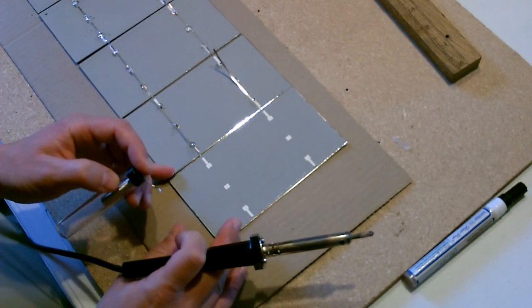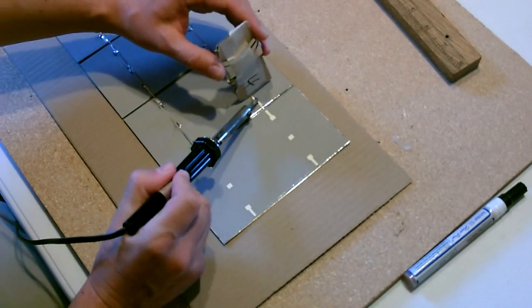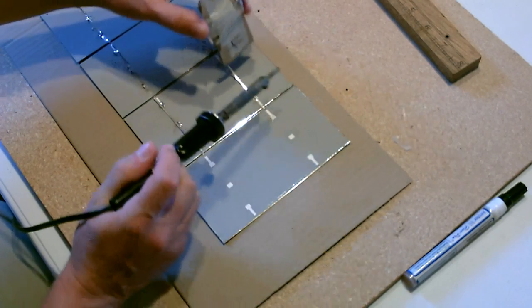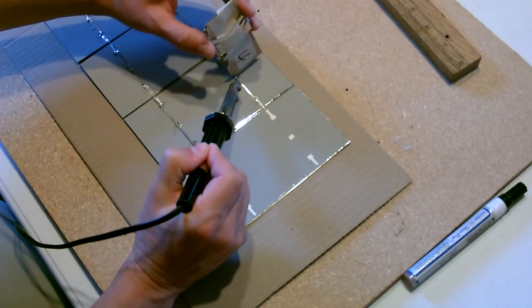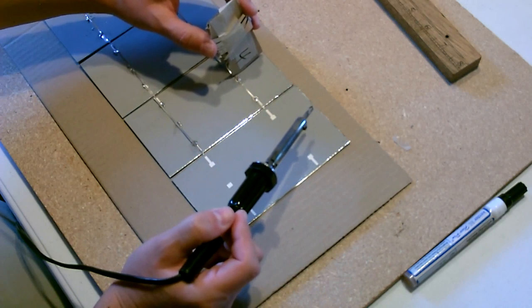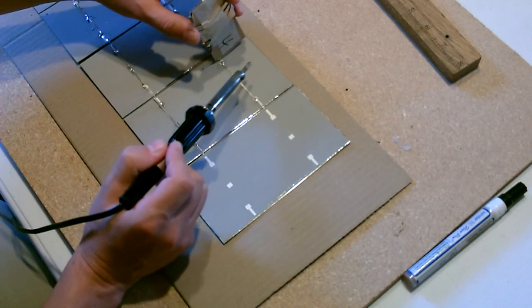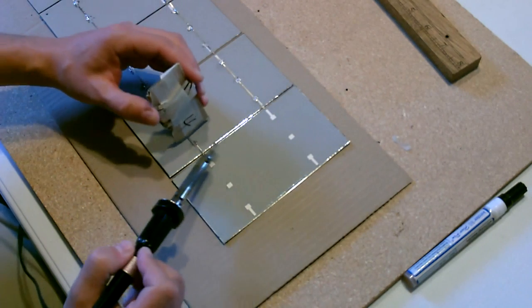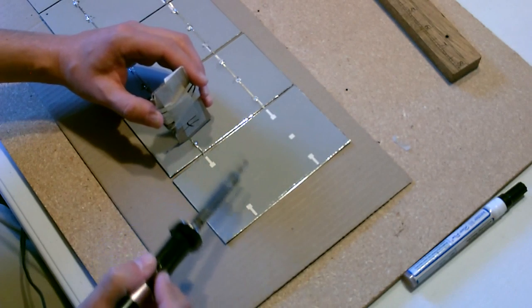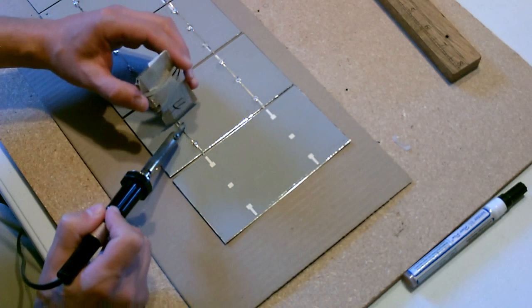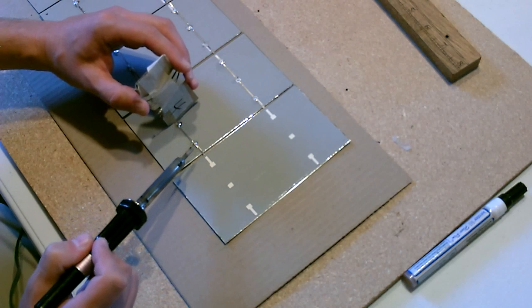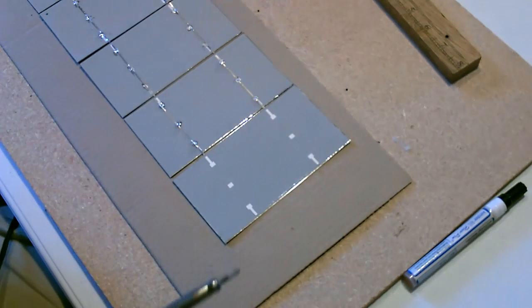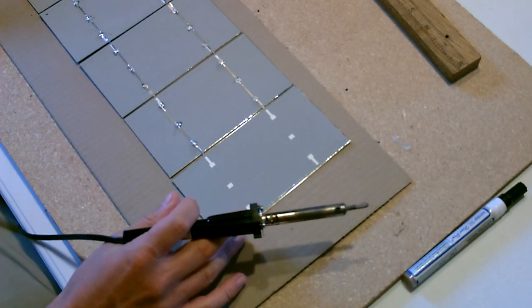Then just set this over top. Perfect. Then you do these three. See how that melts right over it. Okay, just like that. That's all you have to do to connect the cells together.